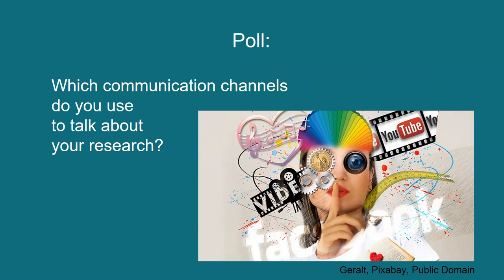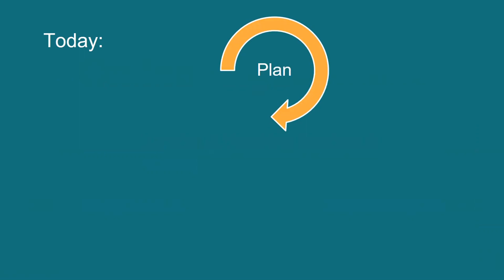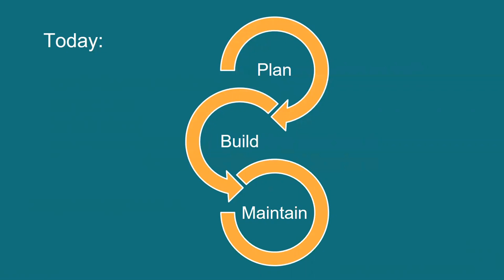Which communication channels do you use to talk about your research? A 2016 survey showed that an awful lot of conversation goes on at conferences and meetings, but that's really just for an academic audience. For the general audience, a lot of chat goes on in places like Facebook, Twitter and LinkedIn. Today we're going to plan our online presence, build an audience and learn about maintaining our presence.